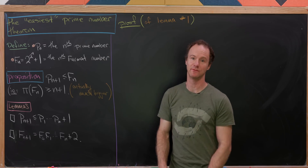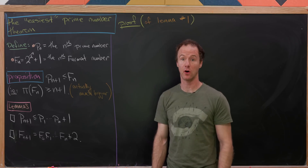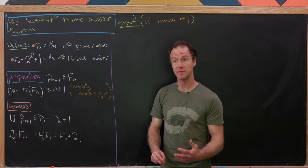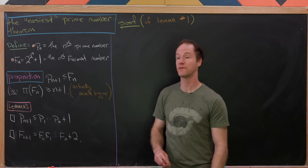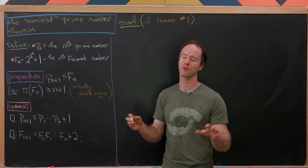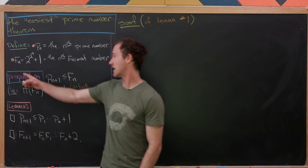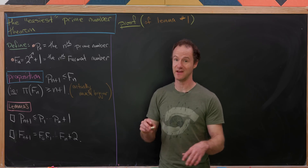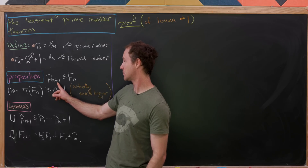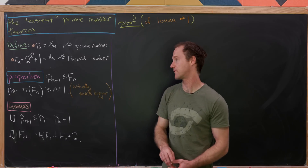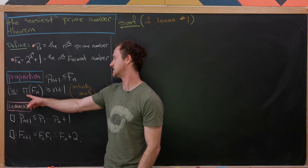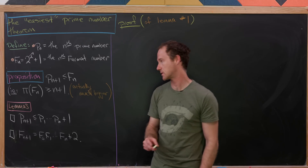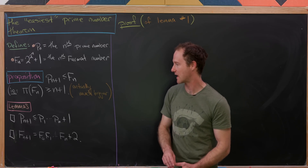For our result, we need two sequences. One is the sequence of all prime numbers, denoted p_n — the nth prime — so p_1 = 2, p_2 = 3, p_3 = 5, and so on. Then we define the nth Fermat number: F_n = 2^(2^n) + 1, which is a very large number for any sizeable n. Our proposition is that the (n+1)st prime is less than or equal to the nth Fermat number — equivalently, π(F_n) ≥ n + 1. In actuality it is much bigger, but we're looking for something provable by elementary methods.